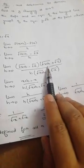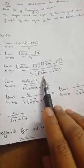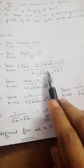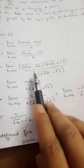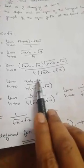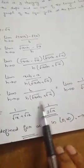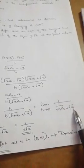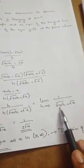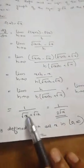We multiply numerator and denominator by the conjugate: root of x plus h plus root x. The numerator becomes root of x plus h minus root x times root of x plus h plus root x, which is of the form a minus b times a plus b, giving a squared minus b squared: that is x plus h minus x, which equals h. So we have h divided by h times root of x plus h plus root x. The h cancels, giving the limit as h tends to 0 of 1 divided by root of x plus h plus root x.